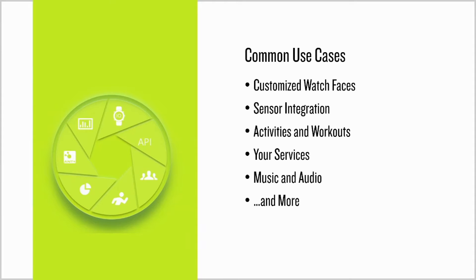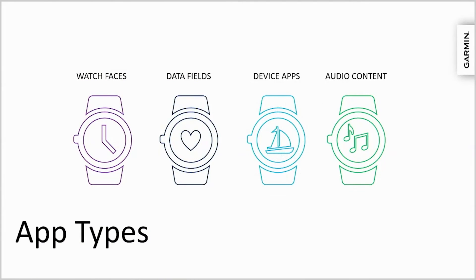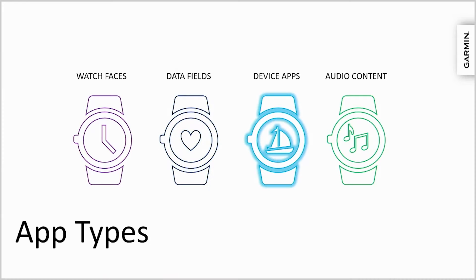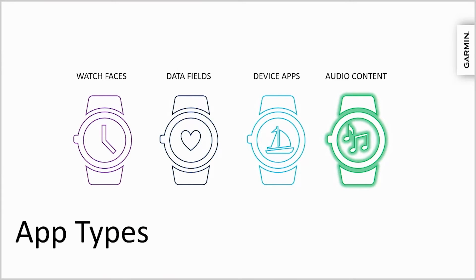ConnectIQ allows you to make four different types of apps. First are watch faces, which serve as the home screen to ConnectIQ-compatible wearables — some just show the time, while others serve as dashboards of information. Next are data fields, which serve as plugins to the Garmin fitness experience; data fields allow developers to compute new metrics, import or export sensor data over ANT or Bluetooth Low Energy, or consolidate information for better visibility. Device apps are launchable experiences that give the developer full control — they can be productivity tools, games, or entirely new activities. Finally, audio content providers are plugins for the Garmin music experience; they allow users to download content from services like Spotify, Amazon Music, and Deezer.